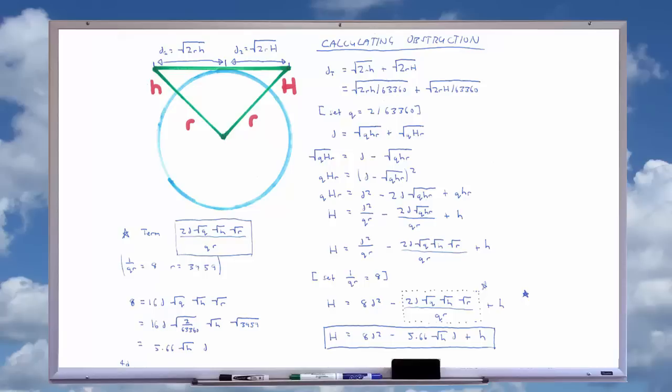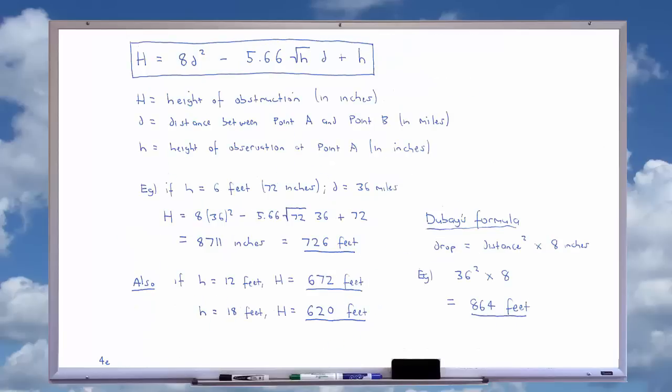Which leaves us with the simplified expression of 5.66 sqrt(h) d. Which means that putting all of this into the equation, we're left with large H = 8d^2 - 5.66 sqrt(h) d + h. This equation can be expressed as the minimum observable height of an object at point B can be calculated as 8 times the distance between point A and point B squared minus 5.66 times the square root of the height of the observer times by the distance again plus the height of the observer.